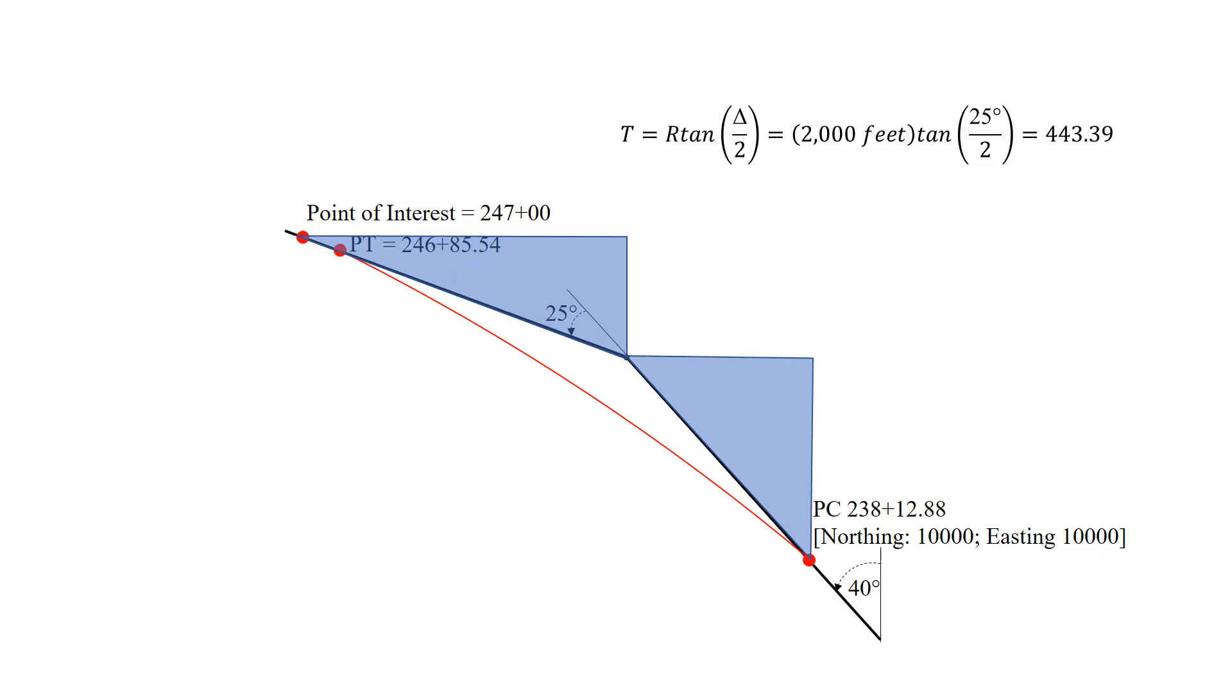We need to calculate the tangent for this curve. It's the radius times the tangent of delta divided by 2. So 2,000 feet times the tangent of 25 degrees divided by 2 gives us a tangent length of 443.39. That's the distance between the PC and the PI, and also from the PI to the PT.